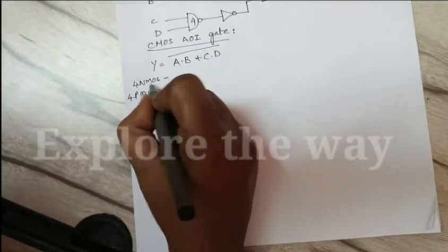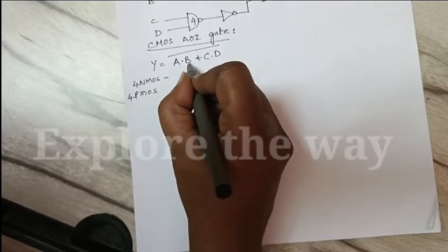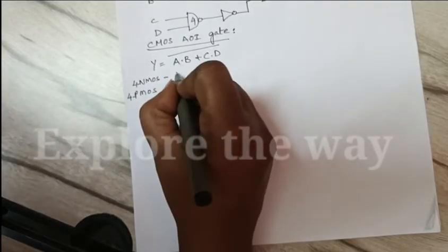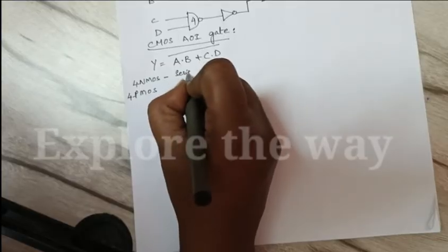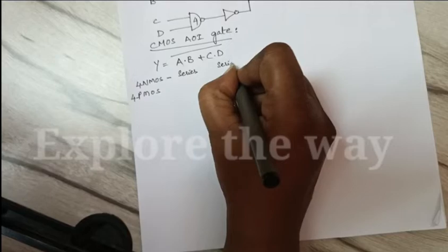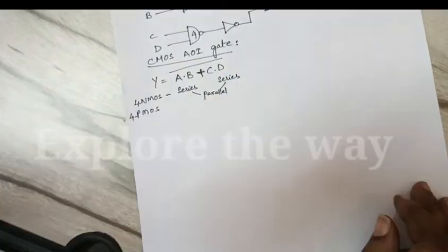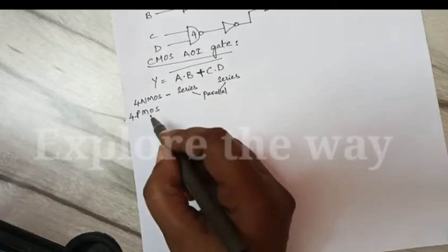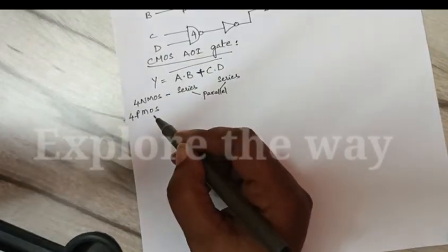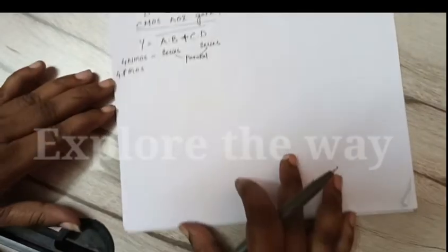Out of these 4 NMOS transistors, the first 2 NMOS transistors AB must be connected in series. CD must be connected in series. These 2 series combinations must be connected in parallel. And the PMOS transistors must be connected in complementary way. Now let us connect it.